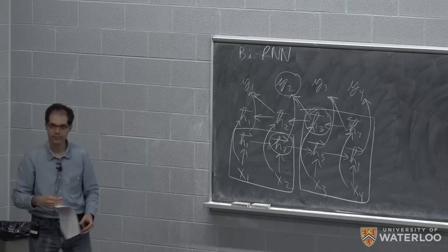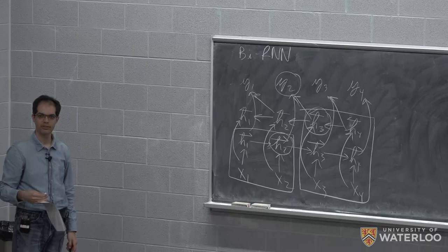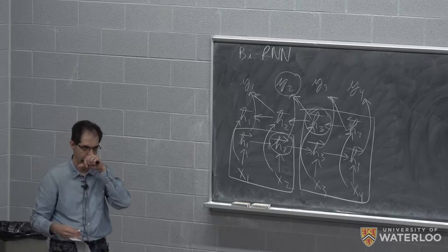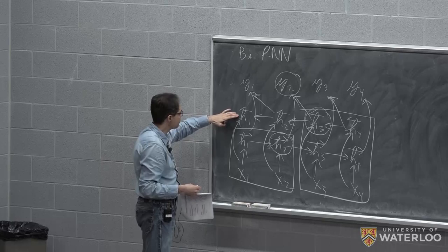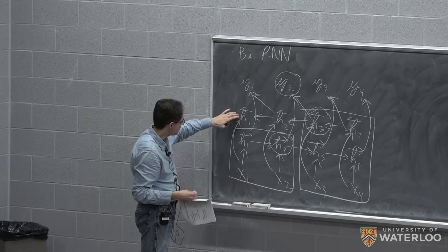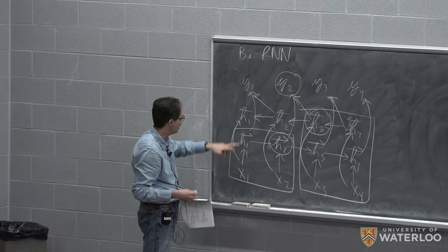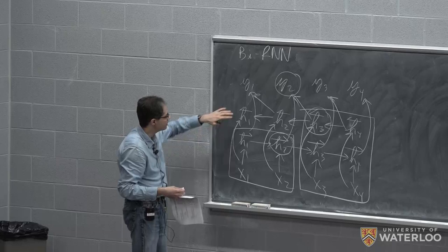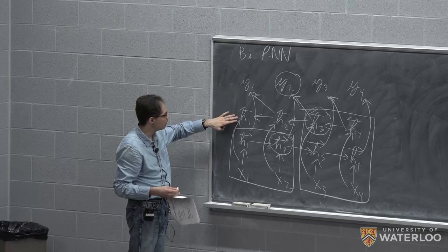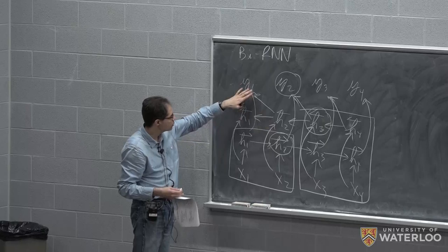In answer to a question about backward h_1: it's not strictly needed because backward h_1 would include x_1, which is already in forward h_1. For y_1, it's sufficient to use forward h_1 and backward h_2, so in practice we don't really need backward h_1.